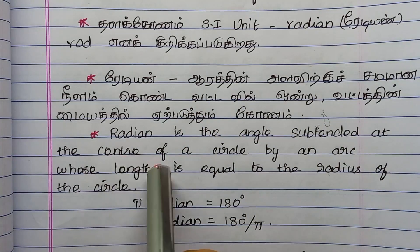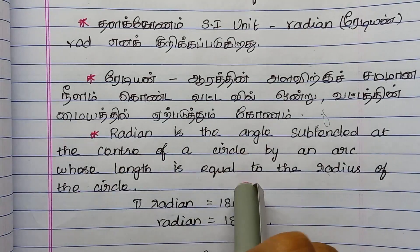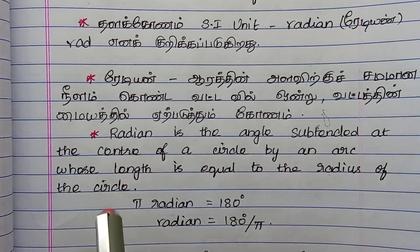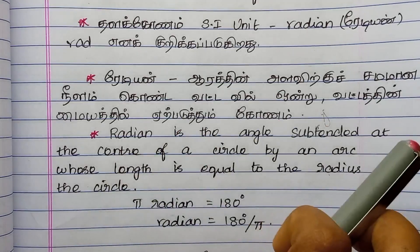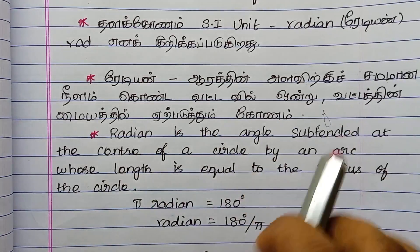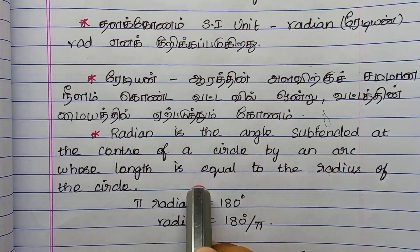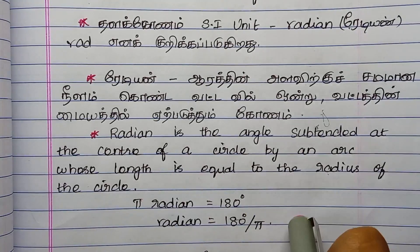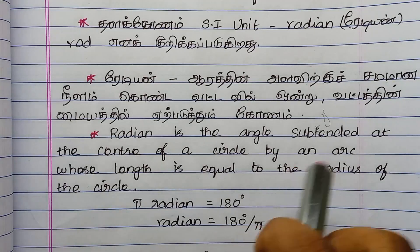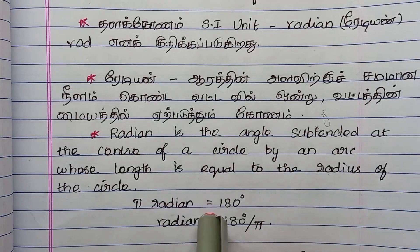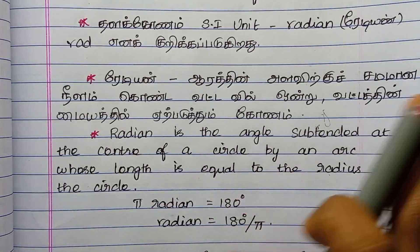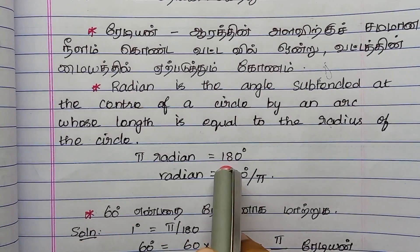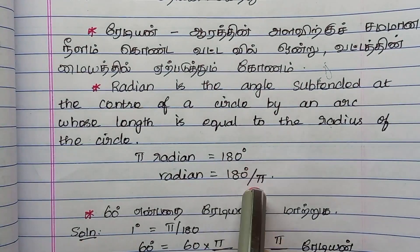The angle is extended at the center of the circle by an arc whose length is equal to the radius of the circle. So π radians equals 180 degrees. Therefore, 1 radian equals 180 degrees divided by π.